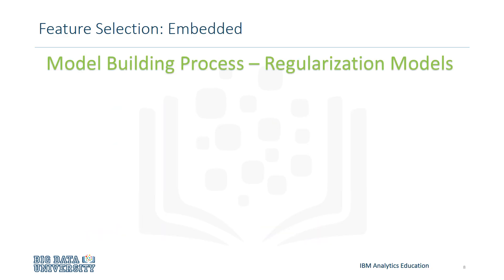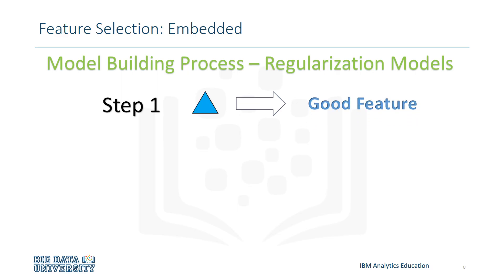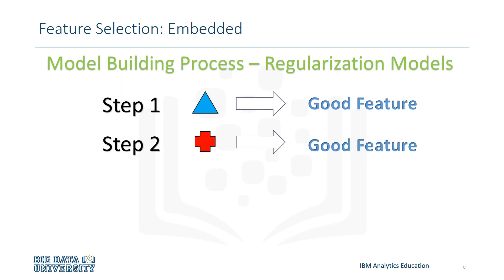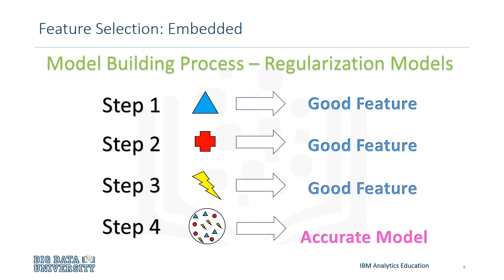Embedded algorithms learn about which features best contribute to an accurate model during the model building process. The most common type is called a regularization model. In our shape example, it would be similar to picking the shapes or good features in each step of the model building process — picking the triangle feature in Step 1, picking the cross feature in Step 2, or picking the lightning feature in Step 3, to obtain our accurate model.